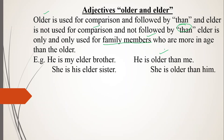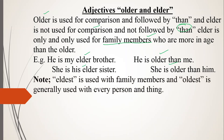Second example: 'She is his elder sister' — here we are stating a family relation. And 'she is older than him' — here we are comparing ages. Note that 'eldest' is used with family members, while 'oldest' is generally used with every person and thing.